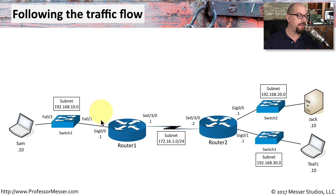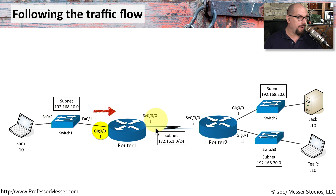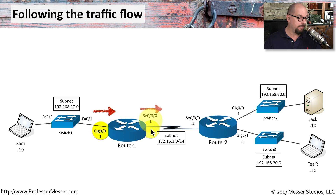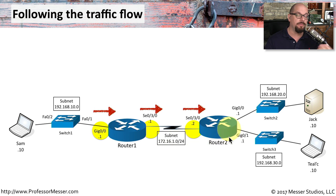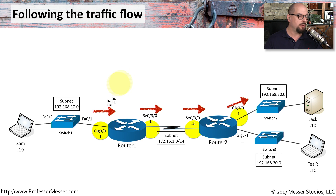An access control list may be added to any one of the interfaces on a router. The access control list is usually associated with the ingress or egress of an interface. So as traffic flows through a router in a single direction, it might evaluate an access control list on one side. Since a router usually has another interface, there will be outbound traffic on that interface — another opportunity to evaluate an access control list. As traffic goes inbound to another router, there's another opportunity for filtering, and as it leaves that router, there's an egress access control list you could reference.